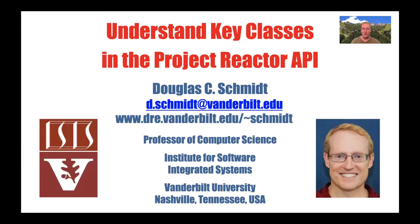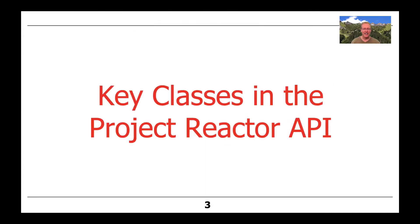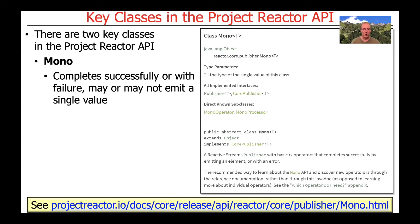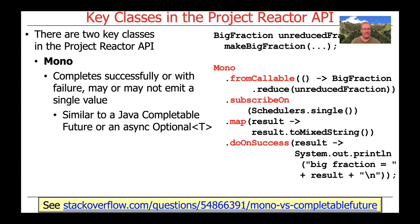Welcome to the next lesson where we'll begin to understand key classes in Project Reactor's API. There are two key classes in Project Reactor. The first is called Mono, and this class completes successfully or with failure and therefore may or may not emit a single value. This class is very similar to the Java CompletableFuture class, or you can also think of it as essentially an asynchronous optional. We'll take a look at a number of different examples here shortly that will illustrate how to program with the various operators defined in the Mono class.